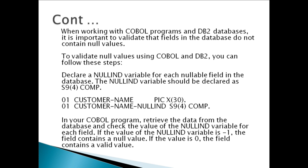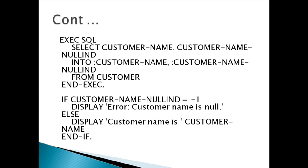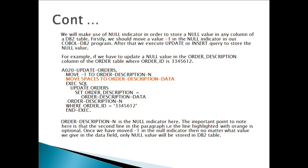In your COBOL program, retrieve the data from the database and check the value of the null indicator variable for each field. If the value of the null indicator variable is -1, the field contains a null value. If the value is 0, the field contains a valid value. We can make use of the null indicator to store a null value in any column of a DB2 table.